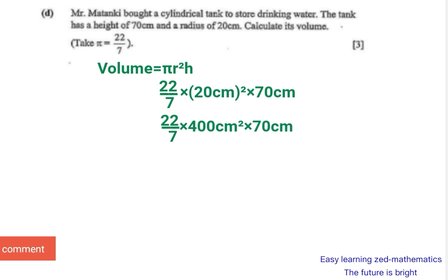To get rid of the fraction, find a number among those on top that has a common factor with 7. The numbers on top are 22, 400, and 70. The number that shares a common factor with 7 is 70. The highest common factor of 7 and 70 is 7 itself, so 7 cancels and 70 divided by 7 gives us 10.